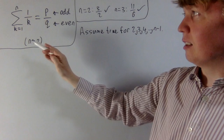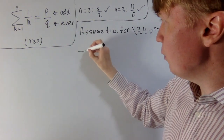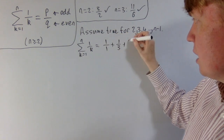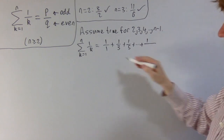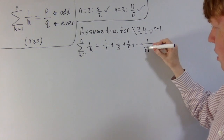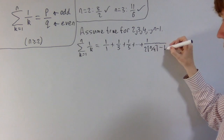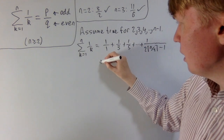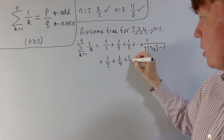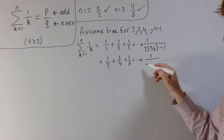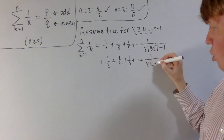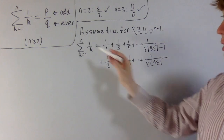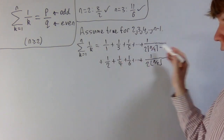We need to prove that this sum going up to n is of the form odd divided by even when we simplify. The first step is to write this sum split into two parts: the sum of all the odd terms — 1 over 1 plus 1 over 3 plus 1 over 5 and so on up to 1 over the largest odd number less than or equal to n, which we can write compactly as 2 times the ceiling of n over 2 minus 1 — and then the sum of all even terms: 1/2 plus 1/4 plus 1/6, up to 1 over 2 times the floor of n over 2. All that matters is we've got the sum of the odd terms and the sum of the even terms.